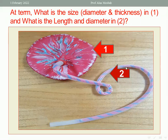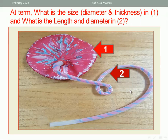The length of the umbilical cord ranges between 50 to 70 centimeters, and the diameter of the umbilical cord is two centimeters.